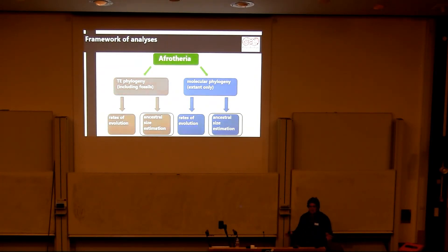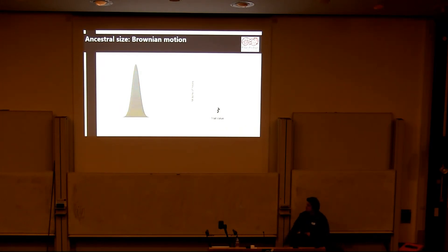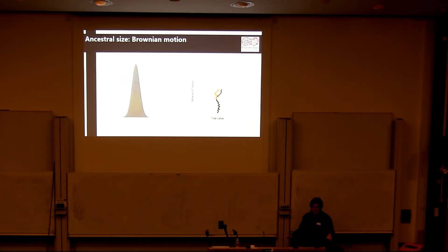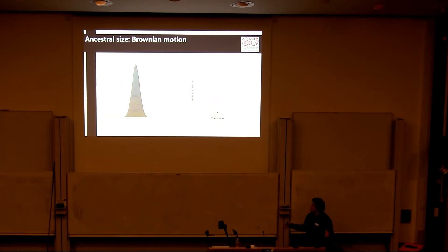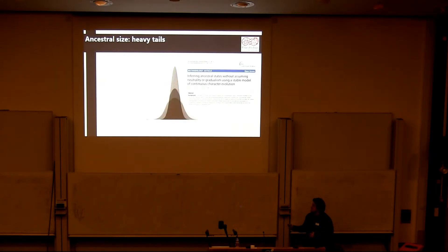The next thing we were interested in was ancestral size estimation — how big or small the ancestral Afrotheria was. The typical way to do this is by applying a Brownian motion model, which basically estimates rates of change for a trait through the phylogeny. A major assumption of it is that there is no rate variation throughout the tree. As we just saw from the rates analysis, that's clearly not true — we're getting a lot of variation.